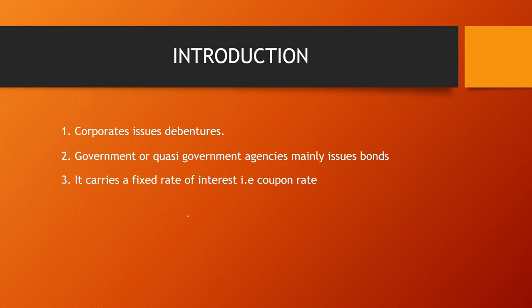In this lecture we are going to discuss when the interest is paid semi-annually, meaning the interest is paid twice a year. After every six months, interest is paid to the debenture holders and bond holders.